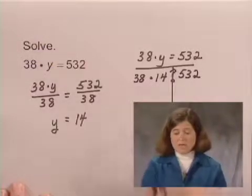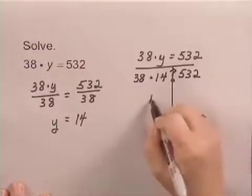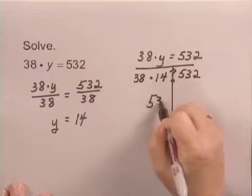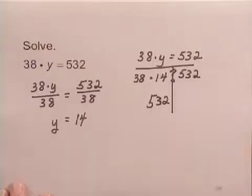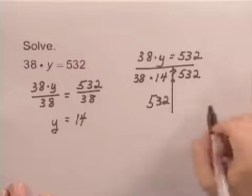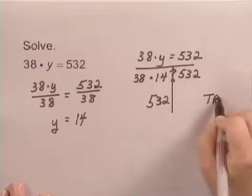If we carry out the multiplication, 38 times 14, we would get 532. The left-hand and the right-hand sides are equal, so we have a true equation.